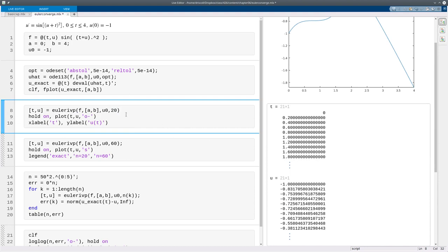So because we took 20 steps, there are 21 values of time and 21 values of the solution, starting from time zero.